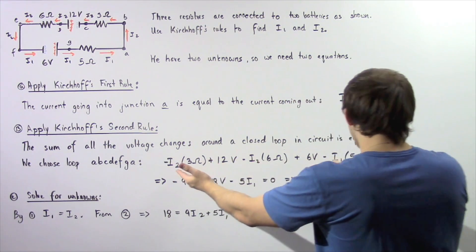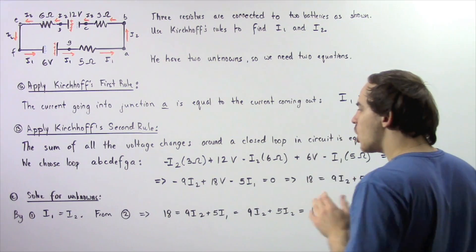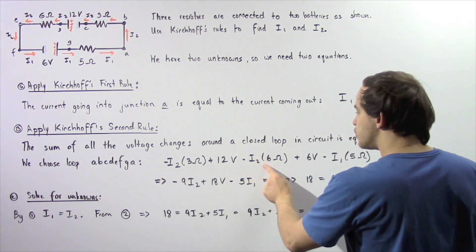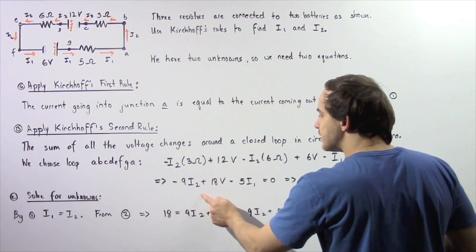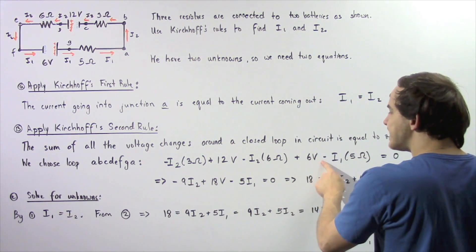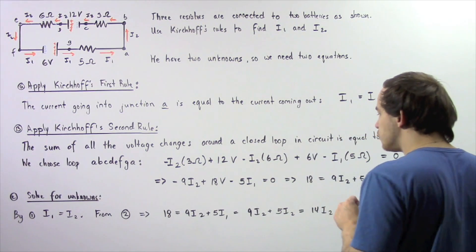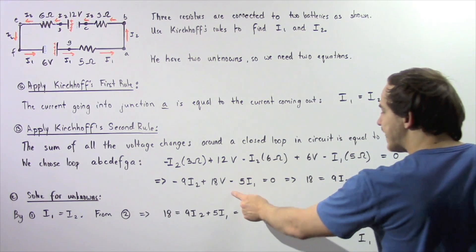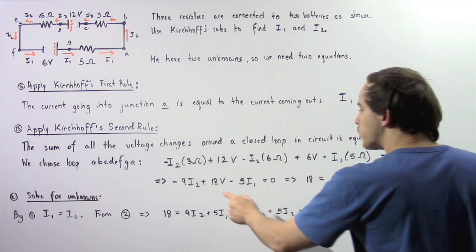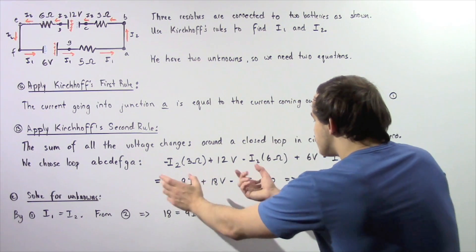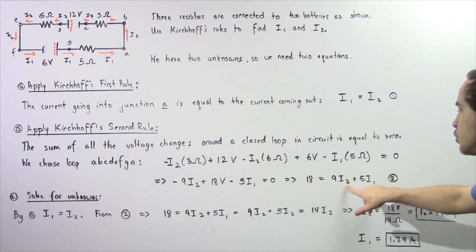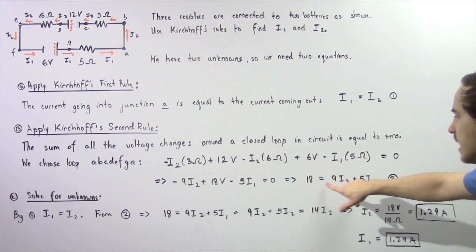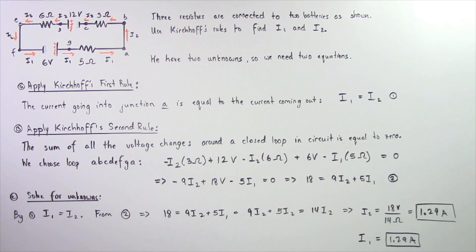Now let's combine terms. The two I2 terms give us negative 9I2. The 12 volts and 6 volts combine to give 18 volts, and we have negative 5I1. Rearranging, we get 9I2 plus 5I1 equals 18 volts. This is Equation 2.